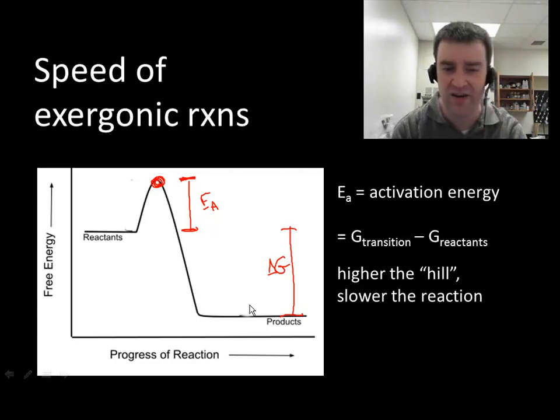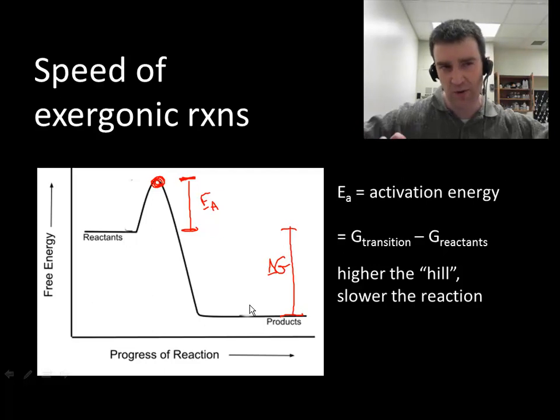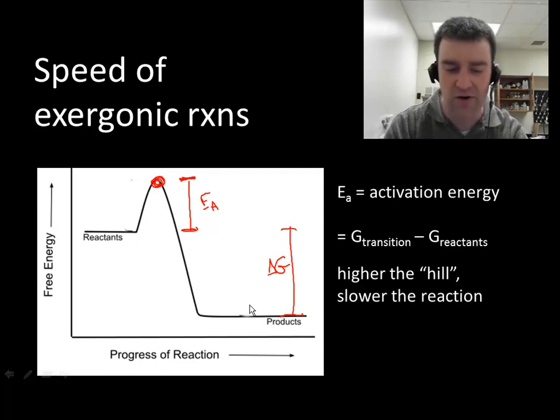What makes the transition state high in energy to begin with? I just want you to imagine that the transition state represents this time when old bonds are breaking and new bonds are forming. Remember that chemical bonds are very stabilizing for the atoms that have that chemical bond. And so this transition state where old bonds are breaking and new bonds haven't quite formed yet are incredibly unstable. And that's what makes the transition state so high.